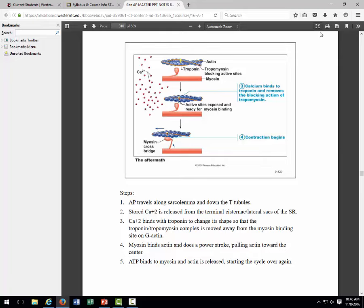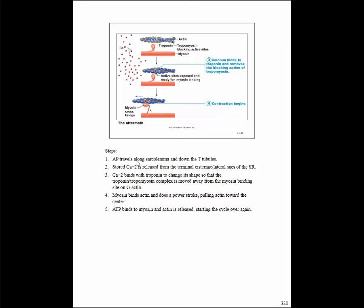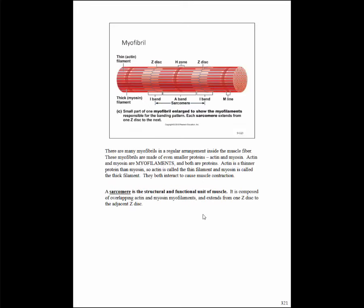Looking at the PowerPoint slide: the action potential at the neuromuscular junction — formed at the sarcolemma from the motor neuron — travels down the T-tubules and causes release of calcium from the sarcoplasmic reticulum. That calcium binds to troponin, tropomyosin moves out of the way, the binding sites are exposed, and myosin binds to actin and does a power stroke, pulling actin toward the center. Then a new ATP binds to myosin, actin is released, and the cycle starts over.